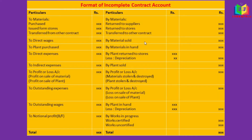Before we go into the problem, we'll see the format of incomplete contract account. In the debit side we have to write the materials — material purchase, materials issued from stores, transfer from other contracts. Direct wages will be debited, plant purchase for this contract will be debited, direct expenses and indirect expenses also debited. Profit on sale of material and profit on sale of plant will also be debited.